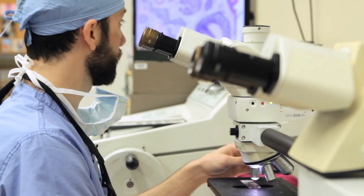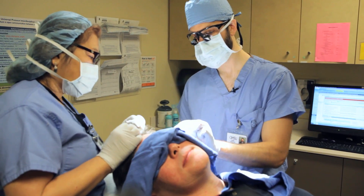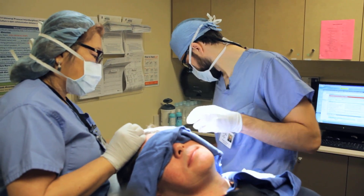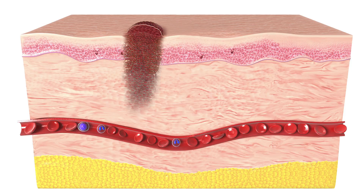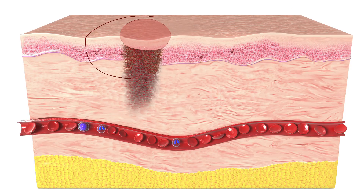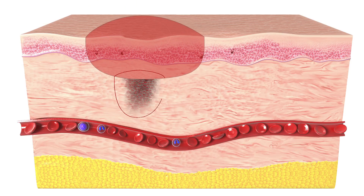If skin cancer cells are seen under the microscope, your surgeon maps the area of concern. You will then return to the procedure room, the affected region will be re-numbed, and additional tissue will be precisely removed and submitted for another stage. This process is repeated until the deep and side edges are clear of cancer. To clear the majority of skin cancers, it takes one to three stages of Mohs surgery.